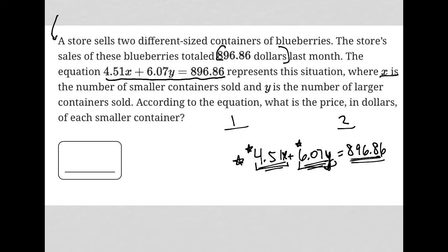Well, it is the number associated with the number of small containers. It is this 4.51. It basically is saying, if X were 10, if I had 10 small containers, then the contribution of the revenue from selling these containers, the contribution to this $896.86, would come from multiplying 4.51 times 10.